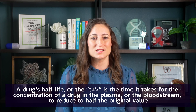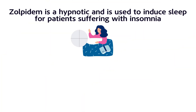Let's look at an example with Ambien or Zolpidem. Zolpidem is a hypnotic used for sleep in patients suffering with insomnia. The half-life is about two and a half to three hours, so for our example we'll use three hours. If my patient takes a dose of Zolpidem 10 milligrams at 9 p.m. in the evening,